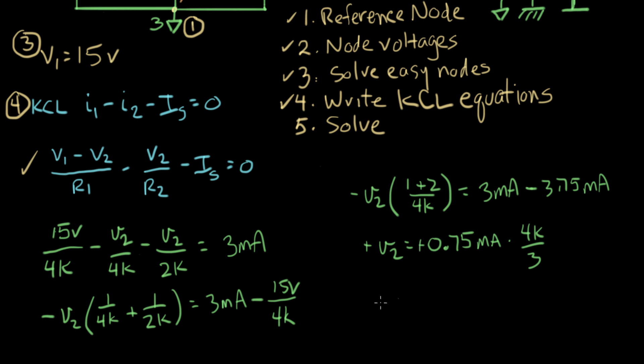Minus V2 equals minus 0.75 milliamps times 4k over 3. Let's get rid of the two minus signs. We don't need those anymore. And V2 equals 1 volt. That's good. We solved it.